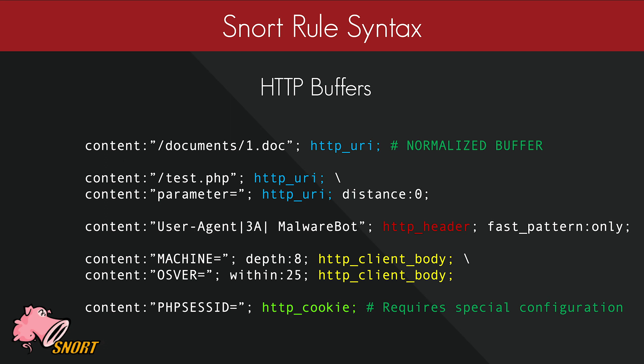HTTP header is also a popular buffer. Here I'm using it to detect a user agent I've made up for the sake of this video. Since I believe the match is extremely unique, I've specified the fast pattern-only modifier to increase the rule's performance. The HTTP client body buffer is geared towards POST requests — normally used to detect parameters in a form being submitted to a web server. Lastly, we have HTTP cookie. It is not always applicable since it's not enabled by default in Snort; if you don't have it enabled, it will resort back to the HTTP header buffer.